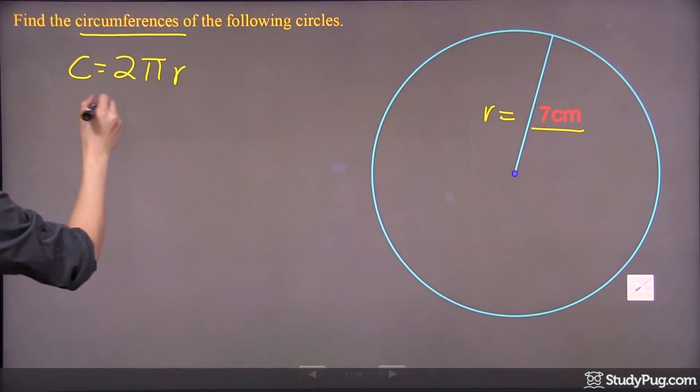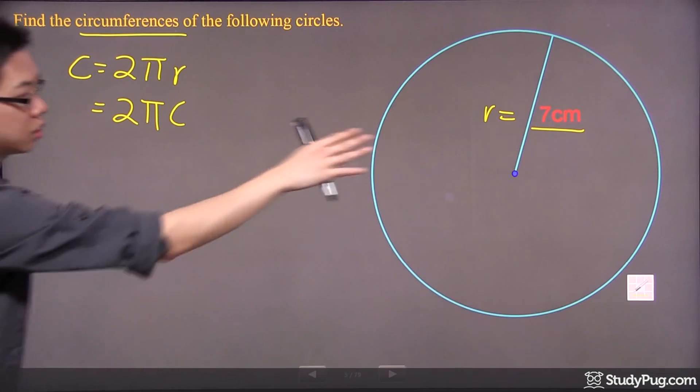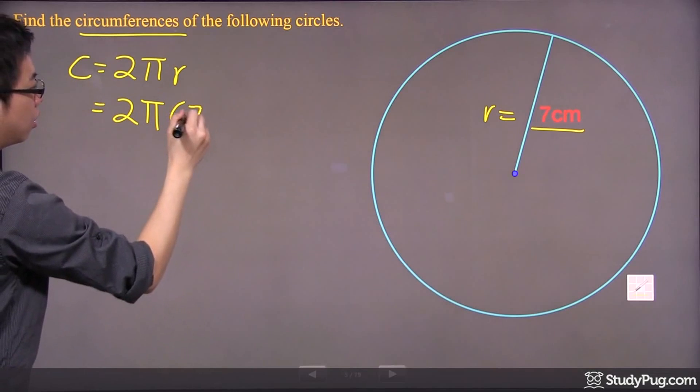The 2 is ready for you, and the π you just have to punch in your calculator. The radius is already provided to you in the information there.